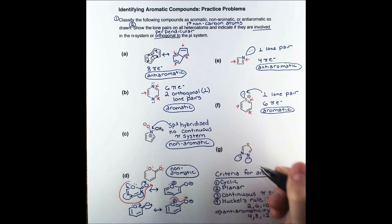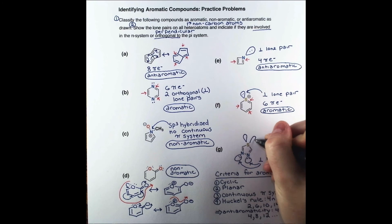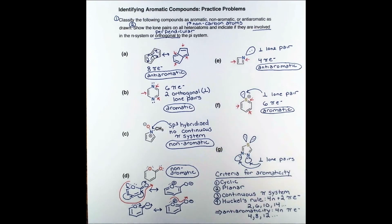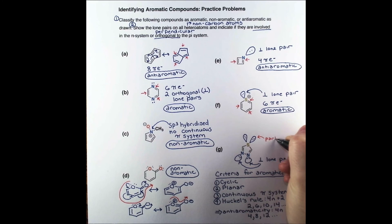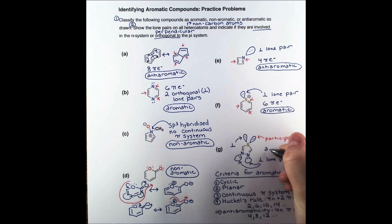In our final example, we should recognize immediately that the nitrogen lone pairs are orthogonal to the pi system. We can draw two lone pairs on sulfur, one of which participates in the pi system. Geometrically, the second lone pair cannot participate, so it is outside of the pi system, though maybe not exactly perpendicular to it. Given the two double bonds in the ring and the lone pair on sulfur, compound G is aromatic.